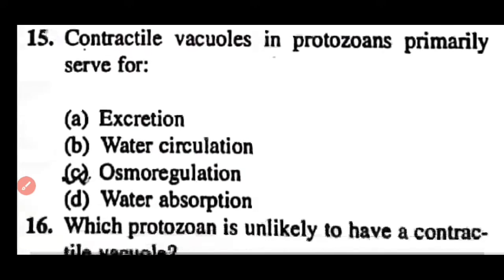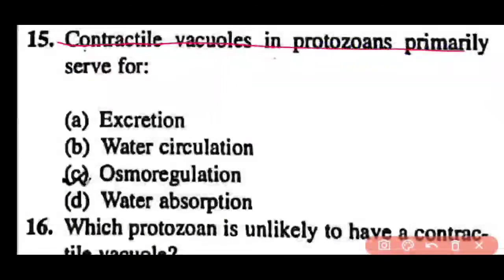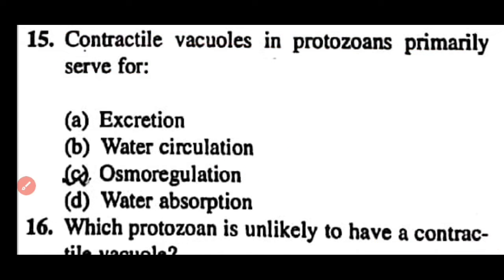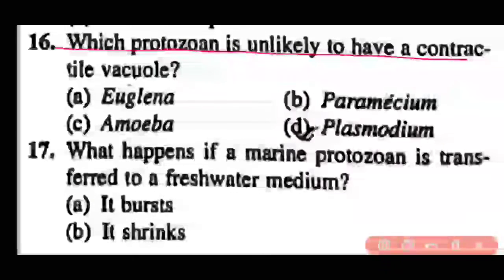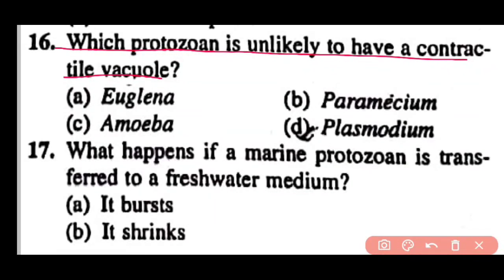Question 15: The contractile vacuole in protozoans primarily serves excretion, water circulation, osmoregulation, or water absorption? Correct answer is option C. Osmoregulation is the main function of the contractile vacuole in protozoans. Question 16: Which protozoan is unlikely to have a contractile vacuole — Euglena, Paramecium, Amoeba, or Plasmodium? Correct answer is option D. Plasmodium has no contractile vacuole; Euglena, Paramecium, and Amoeba all have contractile vacuoles.